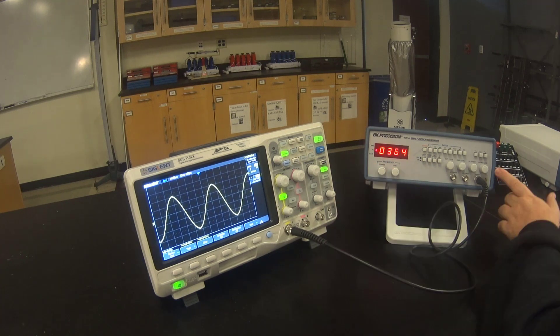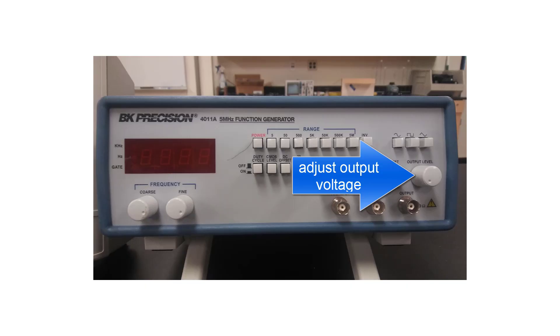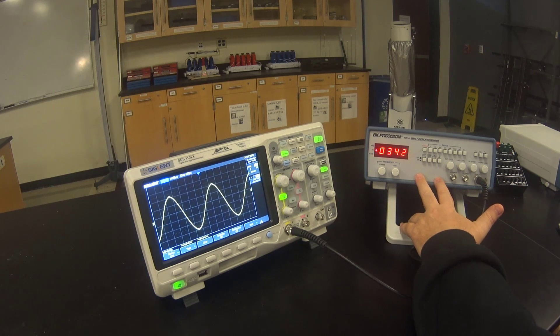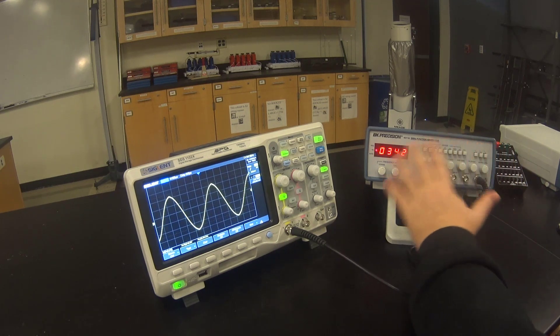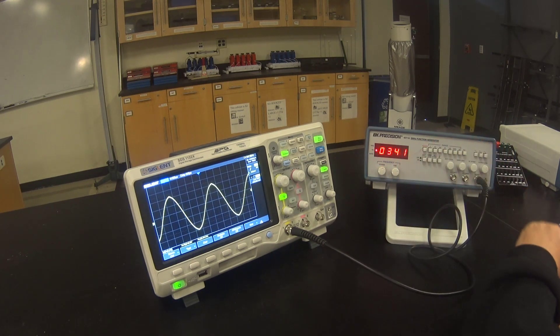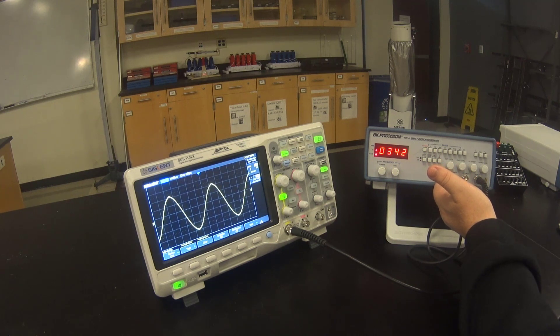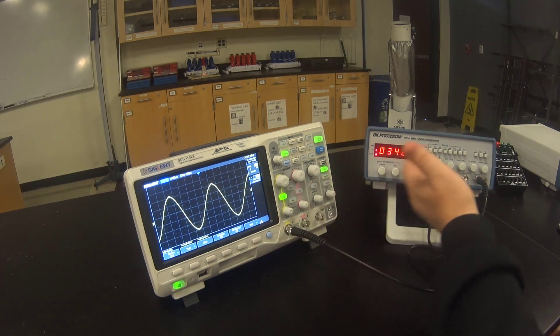Use this knob to adjust the output voltage. Adjust it to about half way. The function generator is providing the signal that we're going to measure with the oscilloscope. Once we've set up its values, we don't want to change them. The oscilloscope is then going to measure the signal that's put out by the function generator.